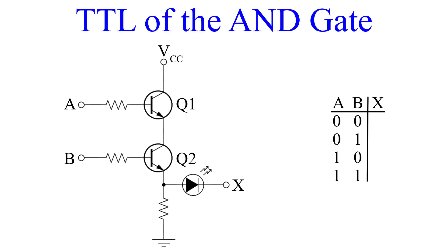Next, we are going to look at an AND gate's TTL. Let's start by applying the bias voltage. What we are seeing now are inputs A and B both at zero. Because neither transistor is biased, there is no current to the output, so our LED is turned off. So for inputs zero and zero, the output is zero.